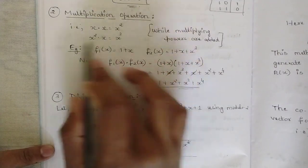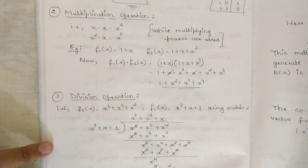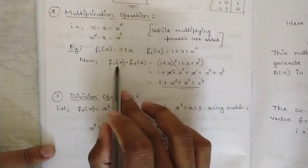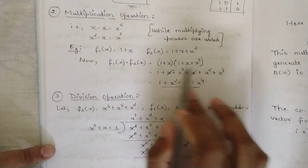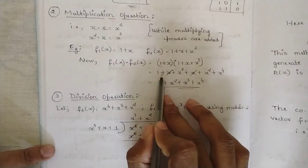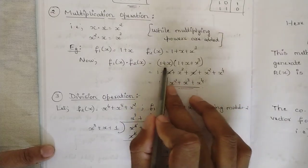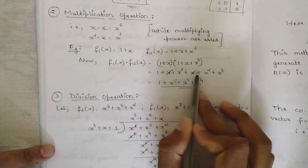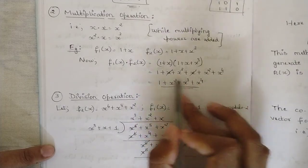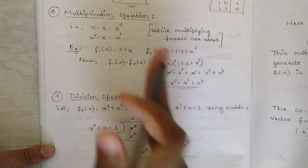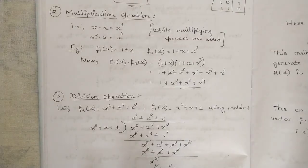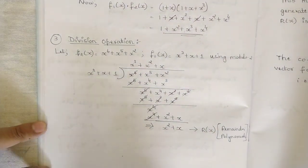There is no change between normal and modulo-2 multiplication. For example, multiplying f₁(x) = (1+x) by f₂(x) = (1+x+x³): multiply by 1 to get 1+x+x³, then multiply by x to get x+x²+x⁴. Here x and x cancel out since they repeat twice under modulo-2 addition. The result is 1 + x² + x³ + x⁴. Now comes the tricky part — division.